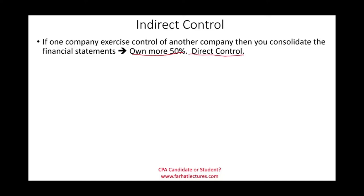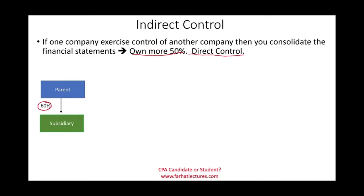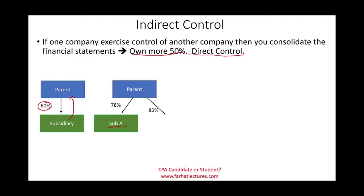Let me show you this in a picture. You have a parent company that owns 60% of another company. If you own more than 60% of the subsidiary, you control that subsidiary. This is called direct control. The parent company could also have control over more than one subsidiary — for example, 78% of Sub A and 85% of Sub B. Both A and B will have to be consolidated with the parent. This is direct control.